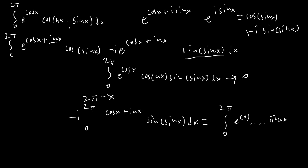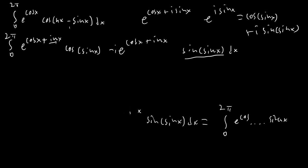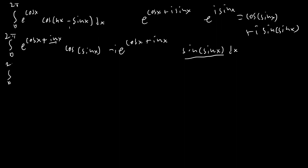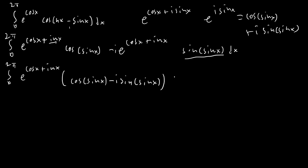Now we erase the working and combine the two separate pieces of our integrand into one big term. They are exactly the same except one has cos(sin x) and the other has sin(sin x) with the negative i factor. So we write the integral from 0 to 2π of e^(cos x + inx) · [cos(sin x) − i·sin(sin x)] dx, which equals the integral from 0 to 2π of e^(cos x − i·sin x + inx) dx.